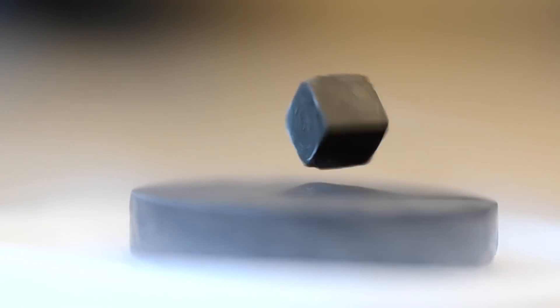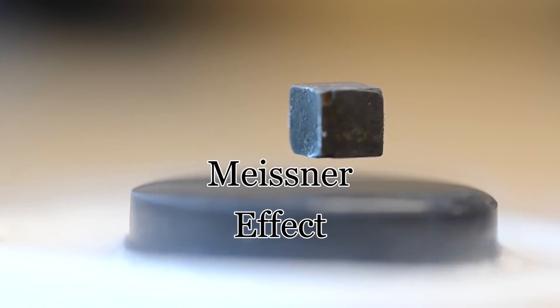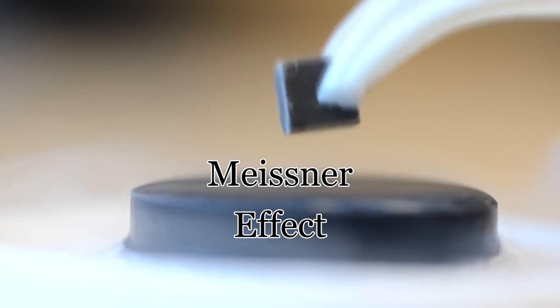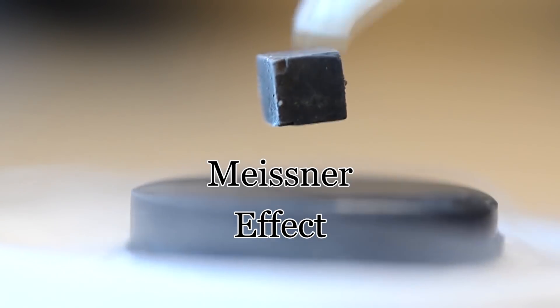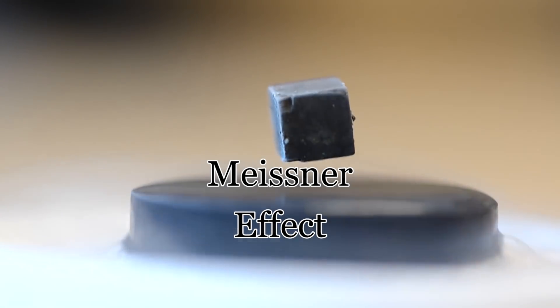In 1933, Walter Meissner and Robert Oxenfeld discovered that when a magnetic field was applied to a superconductor, an electric current was induced in the superconductor that cancelled out the external magnetic field. This effect was called the Meissner effect, and was an instrumental step in explaining superconductivity.